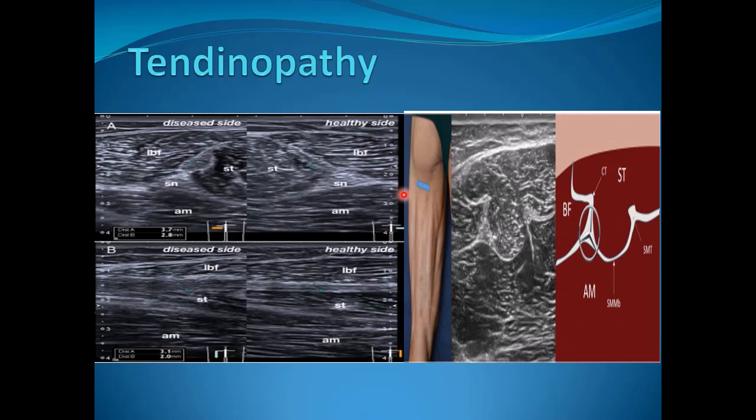A quick review from the previous study of the normal anatomy of the upper posterior thigh: in the hamstring region we see the hyperechoic band of the sciatic nerve anteriorly. The common tendon of the semitendinosus and biceps femoris is noted here, along with the semimembranosus tendon and the adductor magnus muscle.